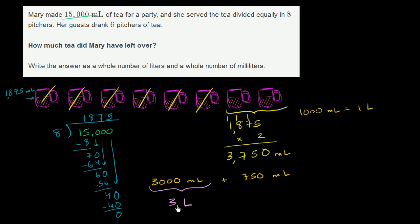So if we wanted to write it as a whole number of liters and a whole number of milliliters, this would be 3 liters and 750 milliliters.